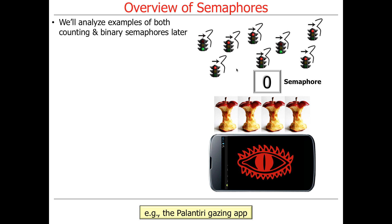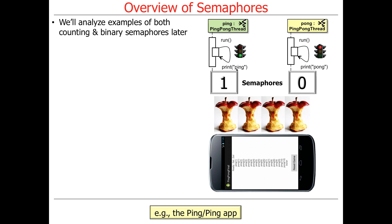We'll analyze examples of both counting and binary semaphores later. Your Palantiri gazing app used in the assignments is an example of a counting semaphore — that's essentially what you're using in assignment 1b, where if the count is zero, anybody who wants to gaze has to wait. We'll also look at an example called the ping-pong app, which is an example of a binary semaphore.